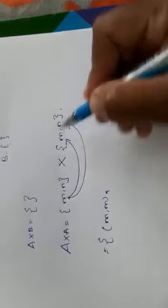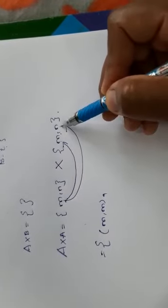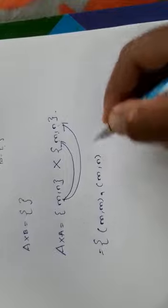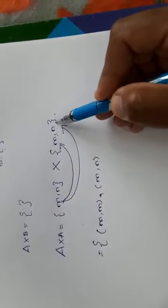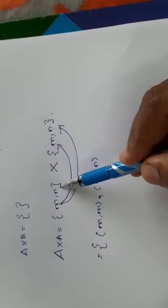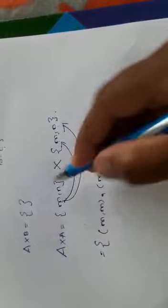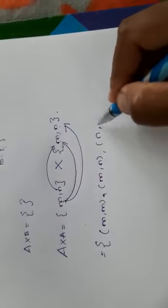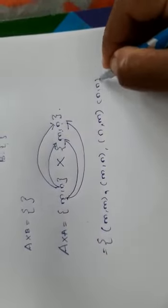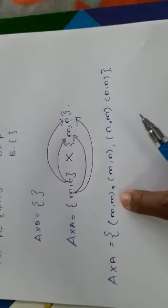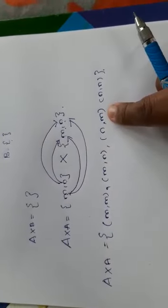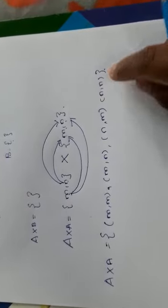Next, pair the first element m with the second element n, giving ordered pair (m, n). With the first element, you have paired with both elements. Next, take the second element n. Then n with the first element gives (n, m), and n with n gives (n, n). Therefore, A cross A is {(m,m), (m,n), (n,m), (n,n)}.